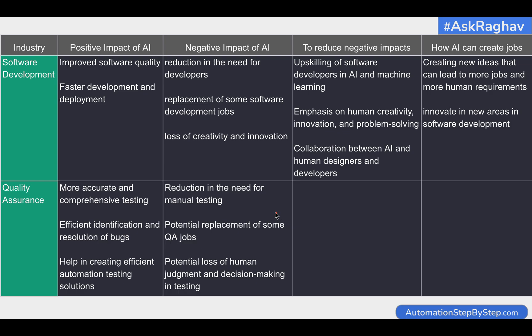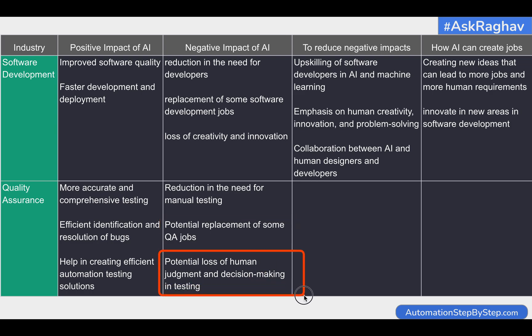The negative impact is that it can result in a reduction in the number of jobs — and it's not just manual testing, because today AI can do a lot of things. It can give automation suggestions and create code for us, so there can be reduction in both manual and automation roles. The number of people required can be lesser if we are taking a lot of help from AI, and there is a potential loss of human judgment and decision making in testing.